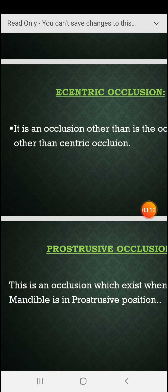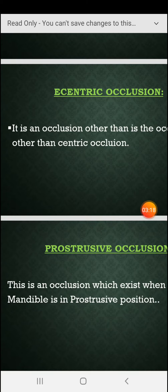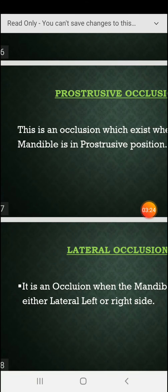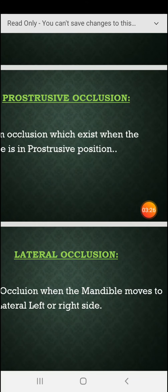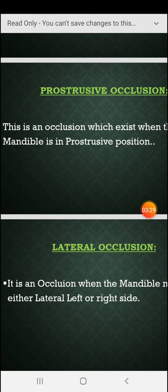Eccentric occlusion is any occlusion other than centric occlusion. Protrusive occlusion is an occlusion which exists when the mandible is in a protrusive position — that is, the mandible moved forward.